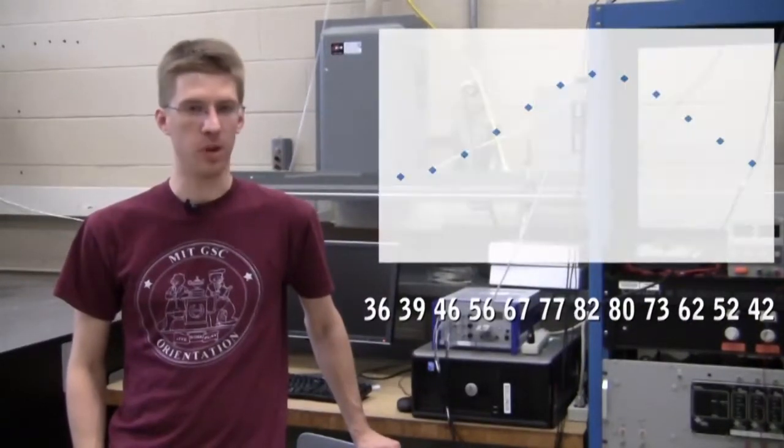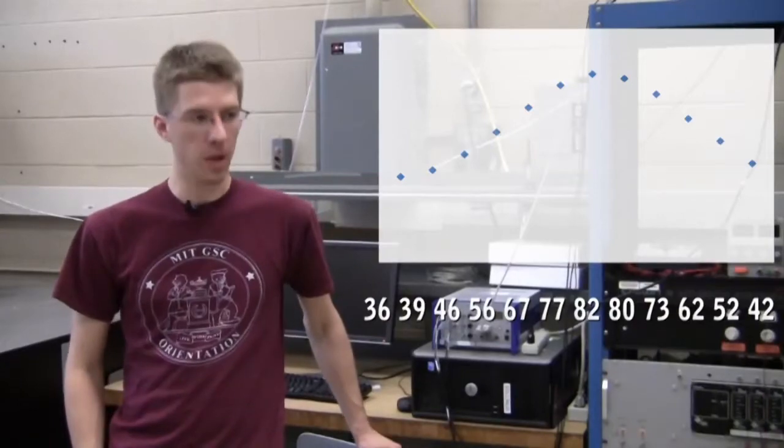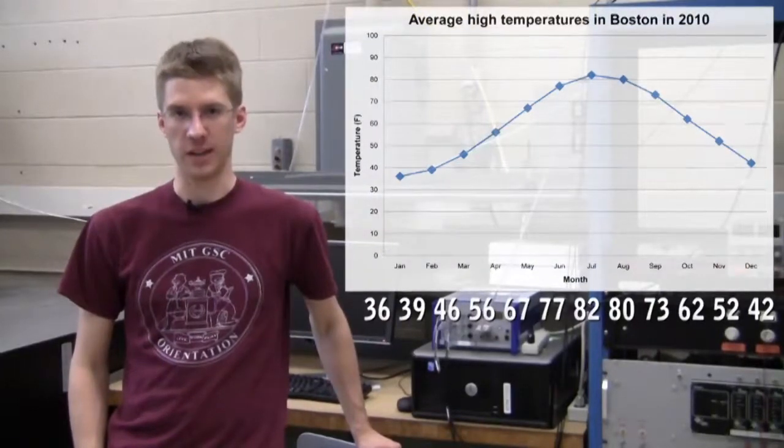However, data collection is only half the battle. Numbers by themselves are absolutely meaningless unless we're able to provide them context. So let's take this for example. Which of these provides the most information? A list of numbers, a plot of those numbers, or a plot of those numbers with actual context?